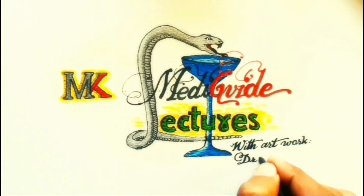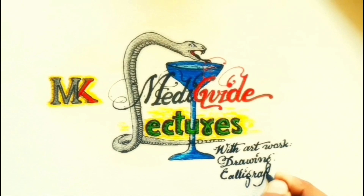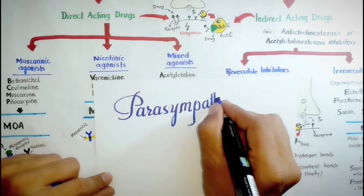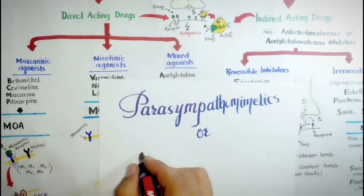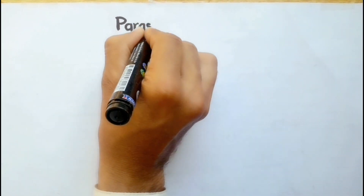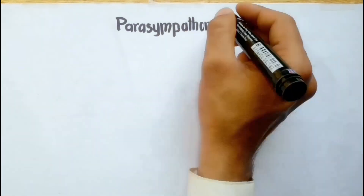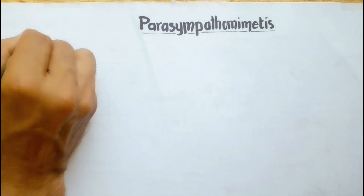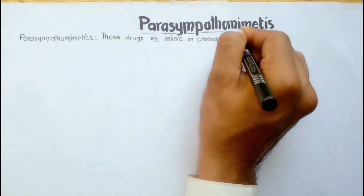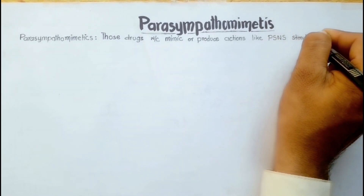Welcome to my YouTube channel mchamedic guide lectures. In this video we will discuss about the parasympathomimetics, also known as cholinomimetics, and their classification and mechanism of action. The word parasympathomimetics is a combination of two words: parasympatho and mimetics. Those drugs which mimic or produce actions like that of parasympathetic nervous system stimulation are called parasympathomimetics.